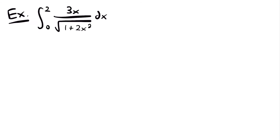Let's look at another example. We have the integral from 0 to 2 of 3x divided by the square root of 1 plus 2x squared. To figure out what to set u equal to, we look for a function and its derivative. We have 1 plus 2x squared, and the derivative of x squared gives a function of x to the first power, similar to the numerator. Also, it's a function inside another function — the square root. So we set u equal to 1 plus 2x squared.